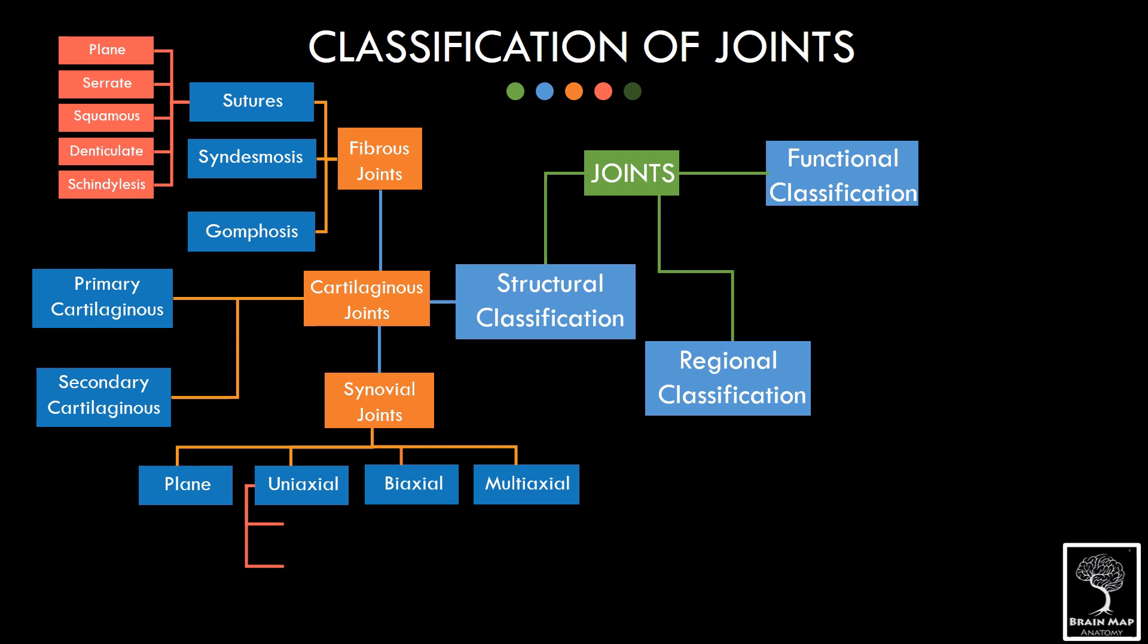The uniaxial joint is further divided into hinge and pivot varieties. Elbow and ankle joints are hinge joints. Superior and inferior radio-ulnar joints, as well as the median atlantoaxial joint, are examples of pivot variety of uniaxial joints.